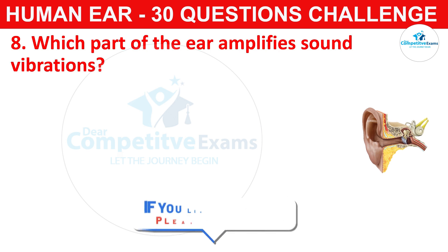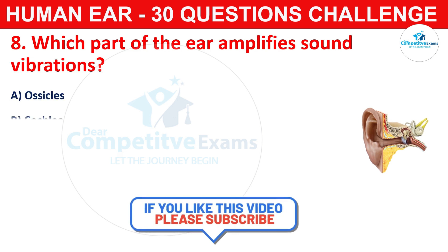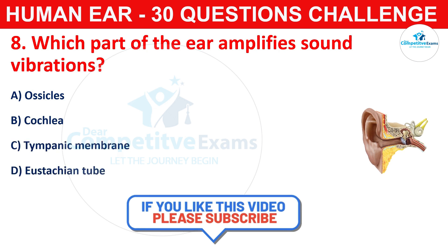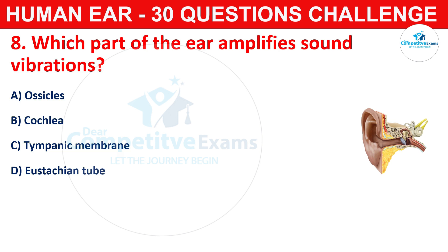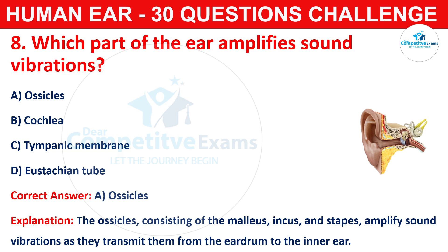Question number eight: which part of the ear amplifies sound vibrations? Your options are ossicles, cochlea, tympanic membrane, or Eustachian tube. The correct answer is A, that is ossicles. The ossicles, consisting of the malleus, incus, and stapes, amplify sound vibrations as they transmit them from the eardrum to the inner ear.